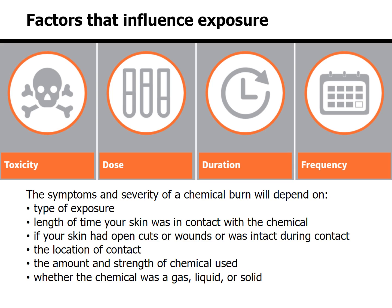Certain factors influence exposure and effects on the body. The symptoms and severity of a chemical burn will depend on the type of exposure, the length of time your skin was in contact with the chemical, if your skin had open cuts or wounds or was intact during contact, the location of contact, the amount and strength of chemical used, and whether the chemical was a gas, liquid, or solid.